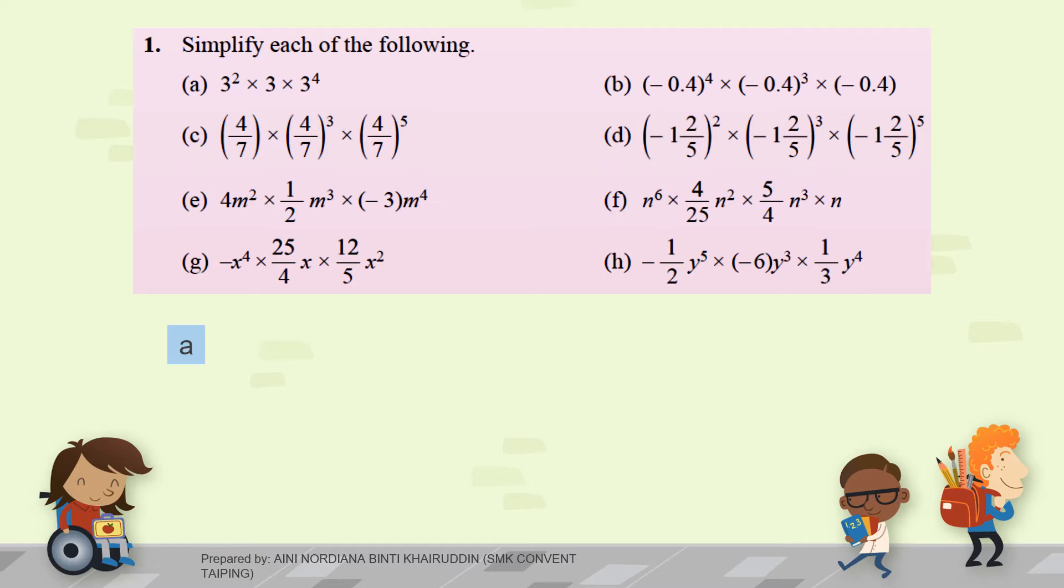But don't forget if you have this kind of number, this is actually the index is 1. So, this is the solution for question 1a. What I mean just now, I have to add 1, 2 plus 1 plus 4. So, this is the answer: 3 to the power of 7.